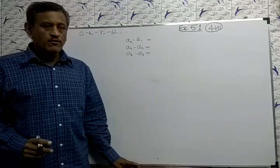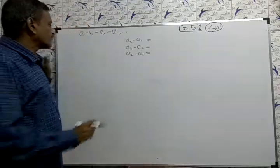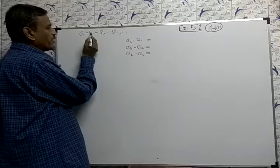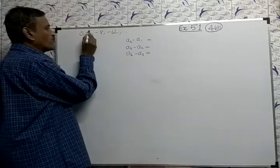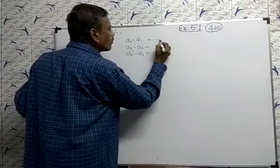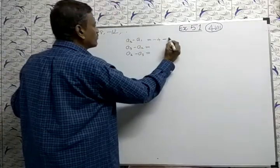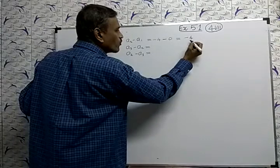Exercise 5.1, question number 4, part 7. We will find here a2 minus a1. This minus this: -4 minus 0. What is the answer? -4.